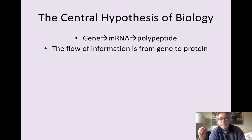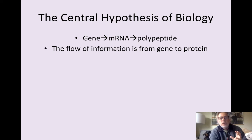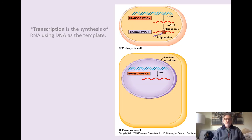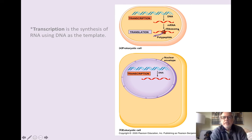The idea is that information flows from gene to protein. In order to understand this, first I'm going to give you a wide-angle view of the two processes, and then we're going to go into each process in detail. Transcription is the synthesis of RNA using DNA as a template, and that's represented here. Here we have DNA, and then some segment of the DNA is transcribed into messenger RNA, and we'll talk a little bit about how that's done later.